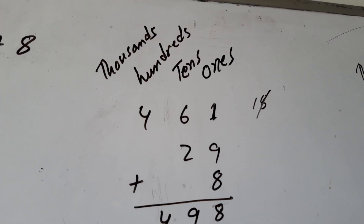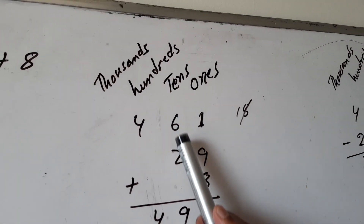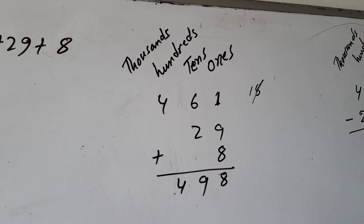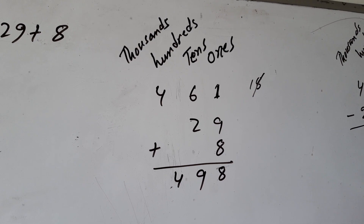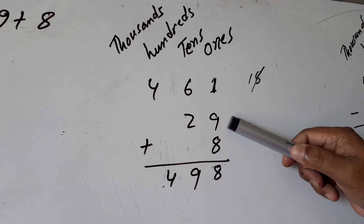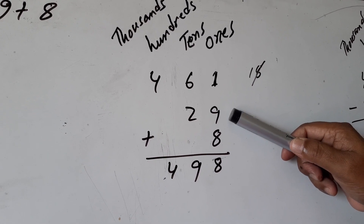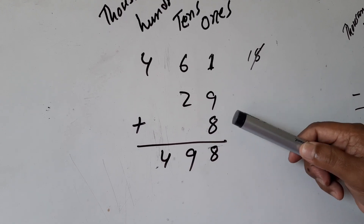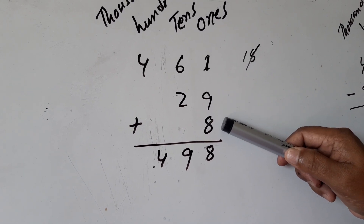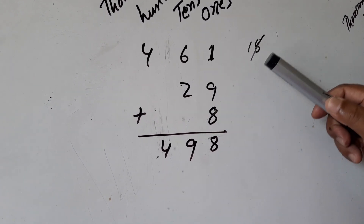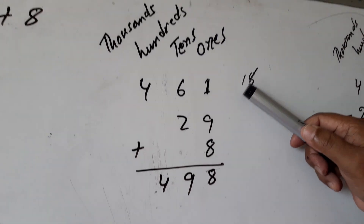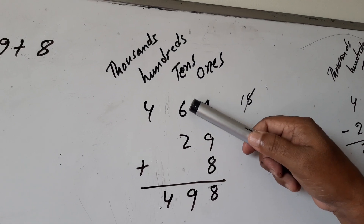This line is for the 1s place, this is for the 10s place, and this line is for the 100s place. Now, we have to add: 1 plus 9 equals 10, 10 plus 8 equals 18. We write 8 here and carry 1.